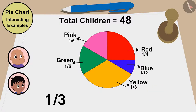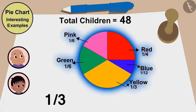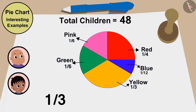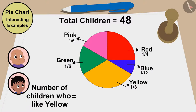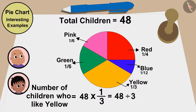Look, Bablu. We have created this pie chart with the information from 48 children, and one third of these children have liked yellow. So the number of children who like yellow will be 48 multiplied by one third, or 48 divided by 3. That is, 16 children.